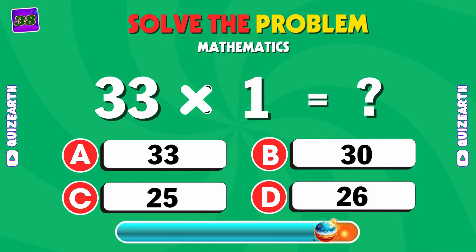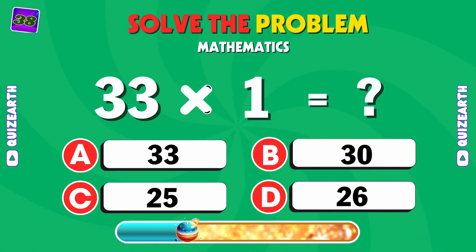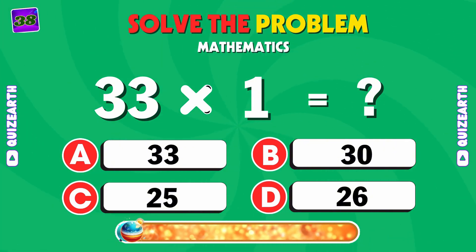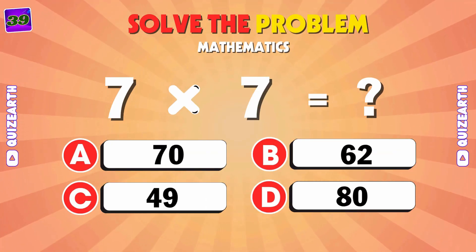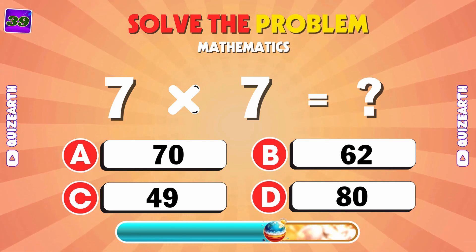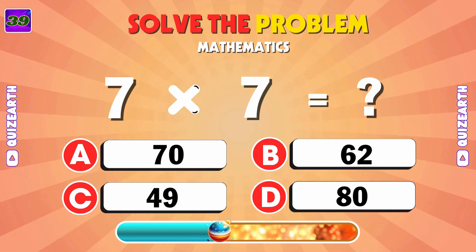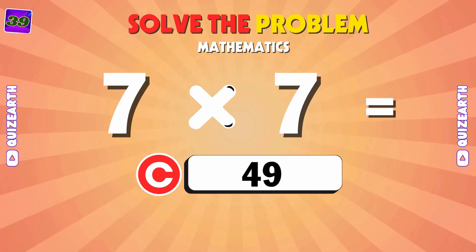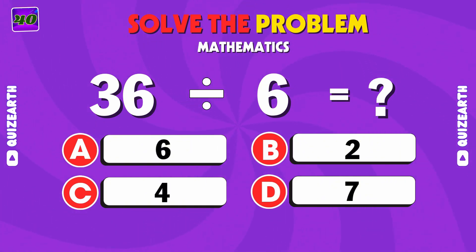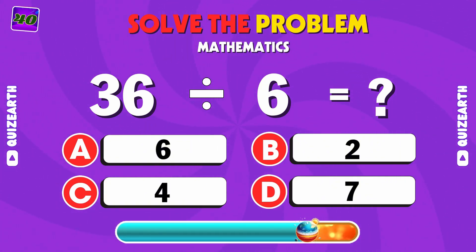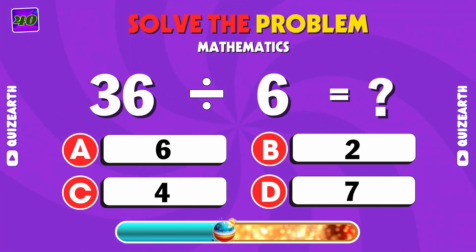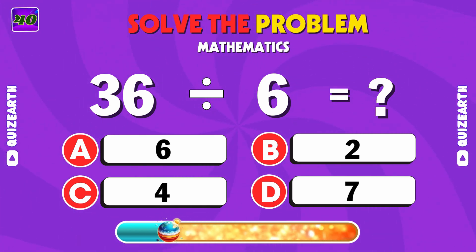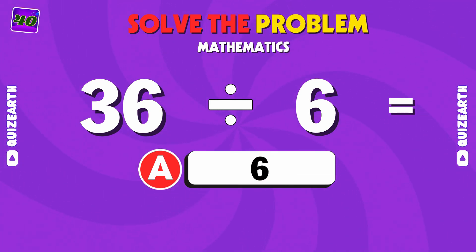Multiplying by 1 — what's 33 times 1? A: 33. What's 7 times 7? C: 49. Divide these. A: 6.